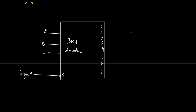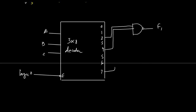Since the 3-to-8 decoder has active-low output, we use NAND gates. The first NAND gate implements f1, which uses minterms 2, 4 and 7, so we connect decoder outputs 2, 4 and 7. A second NAND gate implements f2, which uses minterms 0 and 3, so we connect decoder outputs 0 and 3.